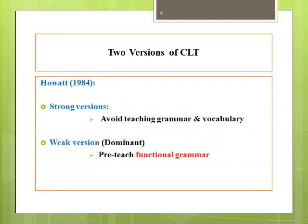According to Hawat, we can identify two versions of communicative language teaching: a strong version and a weak version. The strong version claims that language is learned by using it, contending that intensive exposure and willingness to use the language are two factors that enhance language learning. To a great extent, this view is similar to the one advocated by the direct method and the natural approach.